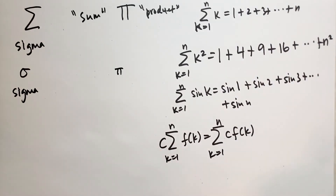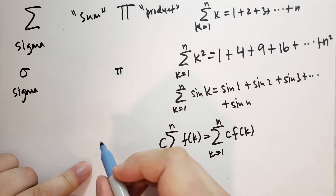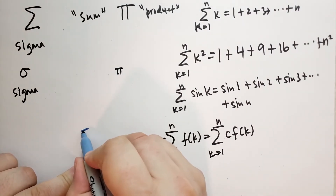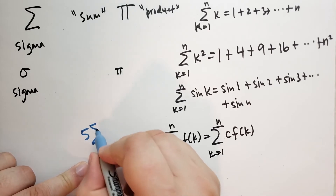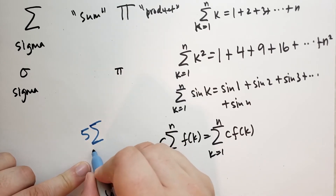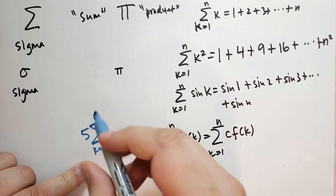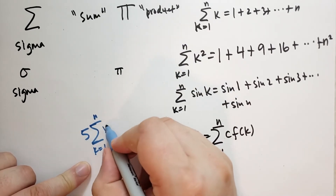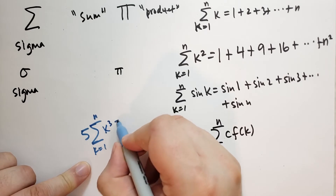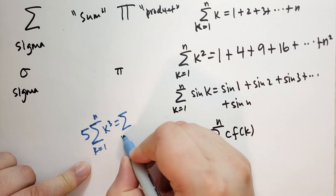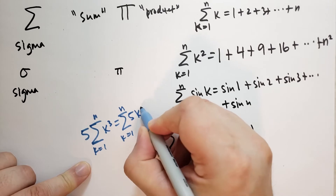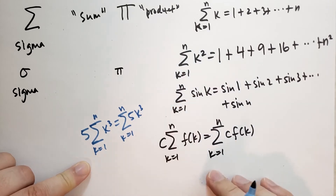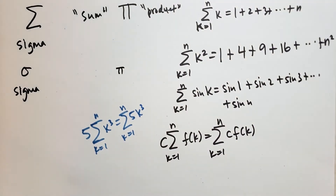He gives a concrete example: suppose we had 5 times the sum from k=1 to n of k³. That's the same as the sum from k=1 to n of 5k³. That's the example he uses.